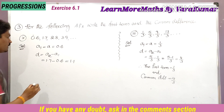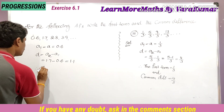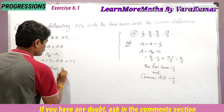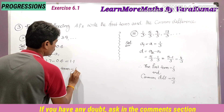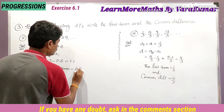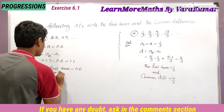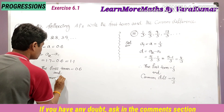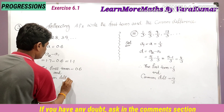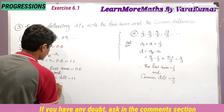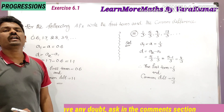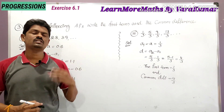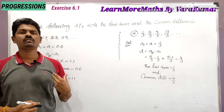So 1.7 minus 0.6 is 1.1. Therefore the first term is equal to 0.6 and the common difference is equal to 1.1. Like this we can find the first term and the common difference. This completes the third problem in Exercise 6.1.